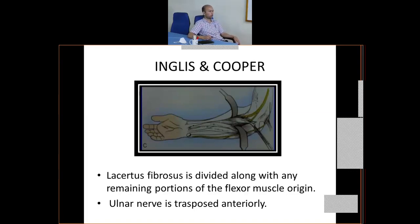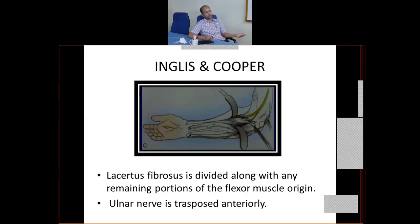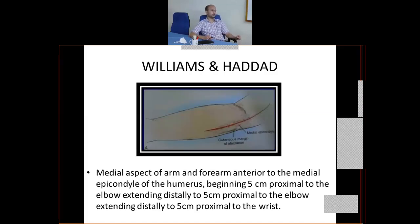The key surgical procedure for Volkman's Ischemic Contracture — remember this one point — is detaching the flexor origins from the medial epicondyle (the common flexor origin), dividing the lacertus fibrosus which was covering the neurovascular structures, and anterior transposition of the ulnar nerve. That is the surgical management of Volkman's Ischemic Contracture.